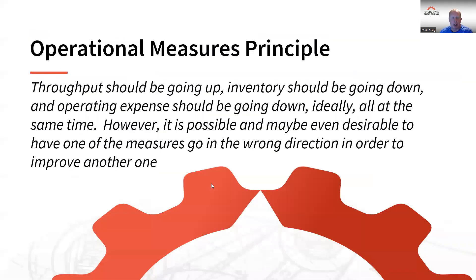Next week's session we're going to talk about the last element of synchronous management: operational measures principles. Throughput should be going up, inventory should be going down, and operating expense should be going down — ideally all at the same time. However, it's possible and may even be desirable to have one of the measures go in the wrong direction in order to improve another one. We'll talk about that in more detail next week.